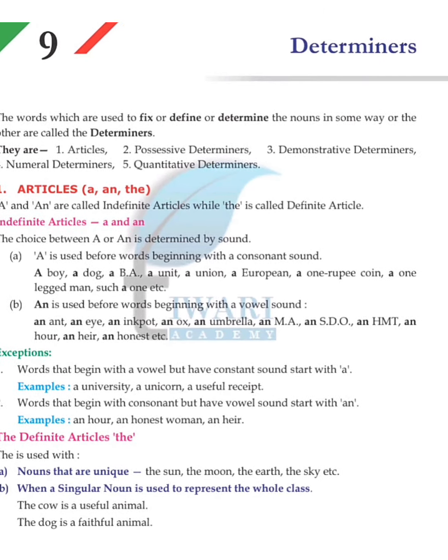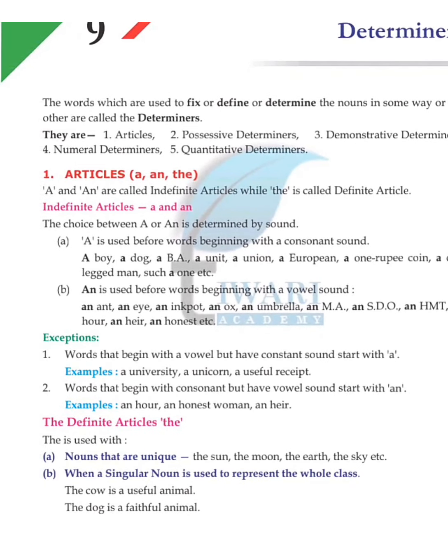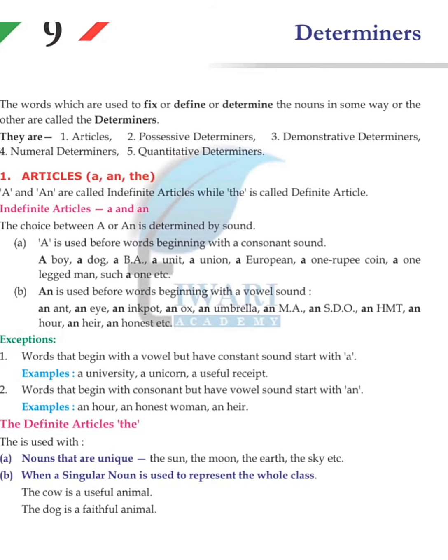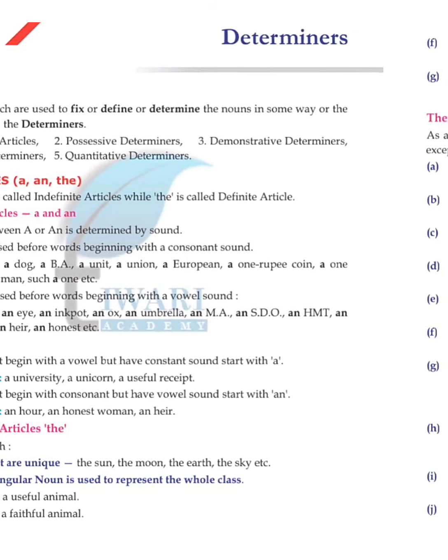'A' is used before words beginning with a consonant sound, like: a boy, a dog, a bat, a unit, a union, a European, a one-rupee coin, a one-legged man, such a one, etc. Note that 'unit' and 'union' begin with a vowel letter but have a consonant sound, so 'a' is used.